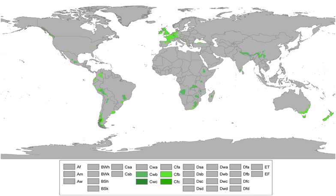Oceanic climates are not necessarily always found in coastal locations on the aforementioned parallels; however, in most cases oceanic climates parallel higher middle-latitude oceans. The polar jet stream, which moves in a west-to-east direction across the middle latitudes, advancing low-pressure systems, storms, and fronts.